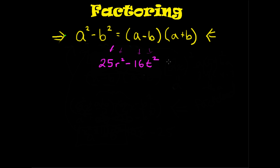So we can rewrite them as 5r squared minus 4t squared, right? Because if I squared each one of these terms, I'd get 25r squared minus 16t squared. Next, all you have to do is realize that 5r is really a, and 4t is really b, of your difference of two squares.